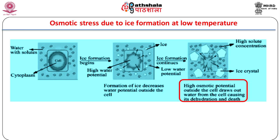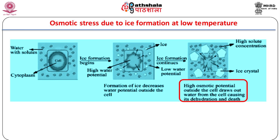Metabolic activity is arrested or reduced due to loss of enzyme activity at low temperature. Photoinhibition followed by photo-oxidation, destruction of chlorophyll, and ultimately cell death is seen in leaves of chilling-sensitive plants like bean, cotton, maize, rice, and tomato. Low temperature also decreases the fluidity of membrane lipids.